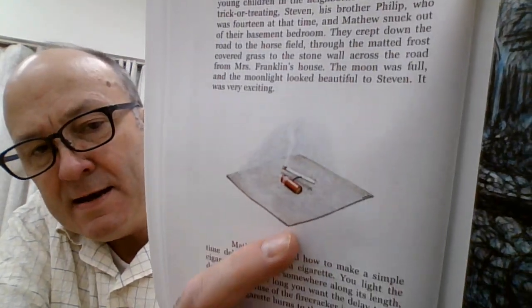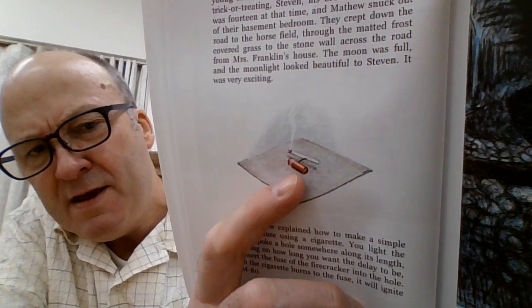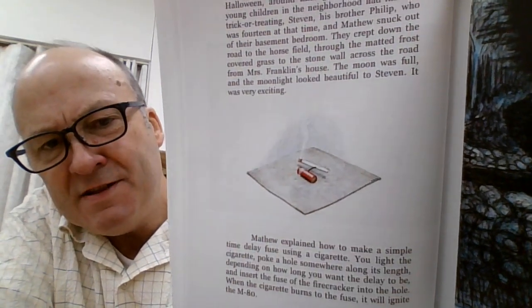So here's a picture of that's kind of set up with an M-80. There's a cigarette, and you have the M-80 there. The fuse comes out the side of those things. So anyway, that's what Matthew showed Stephen.